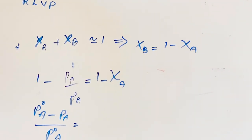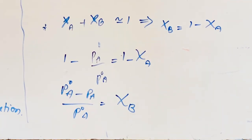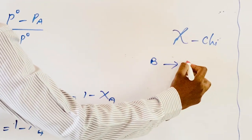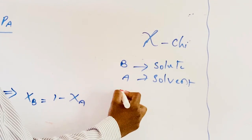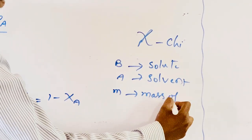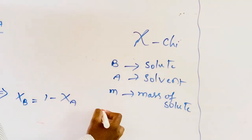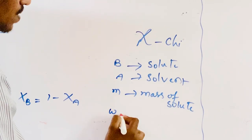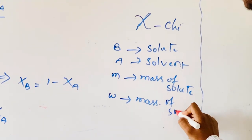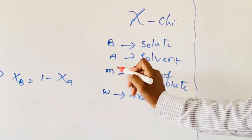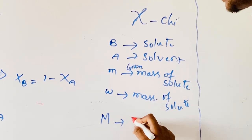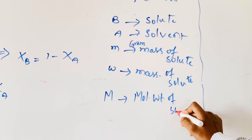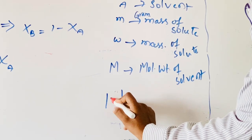Therefore we can write here χ_B. As earlier discussed, B represents the solute and A represents the solvent. The mass of solute is represented by small w, and capital W represents the mass of solvent.